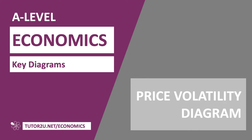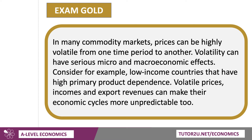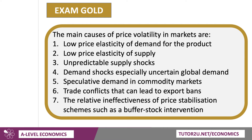Let's spend a few minutes together thinking about price volatility at a micro level. In many commodity markets, prices can be highly unpredictable from one time period to another, and that volatility — that movement up and down in price — can have serious micro and macroeconomic consequences. For example, in development economics, many low and lower-middle income countries are highly primary product dependent, and volatile world prices and export revenues can make their economic cycles highly unpredictable as well.